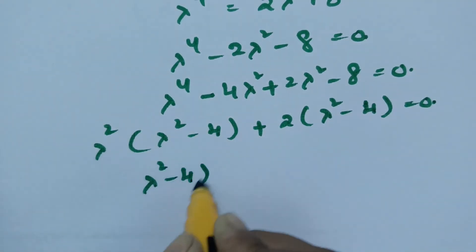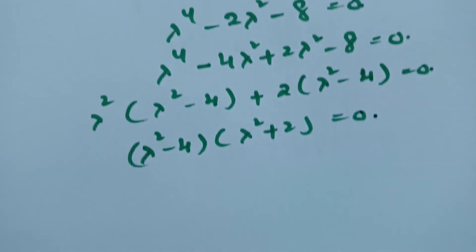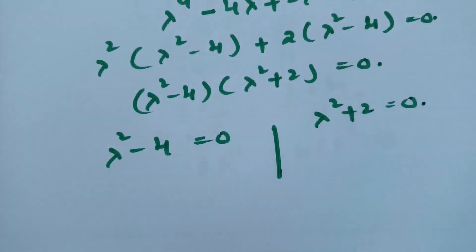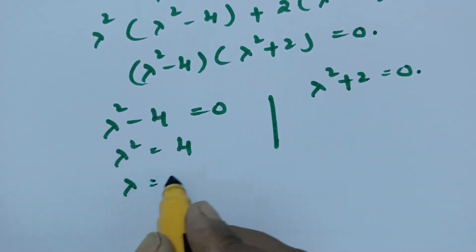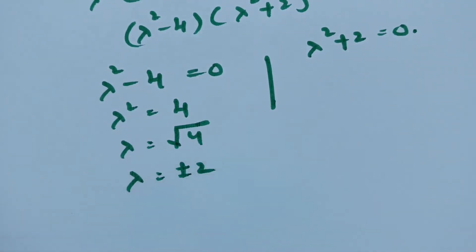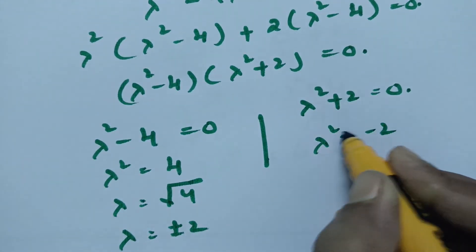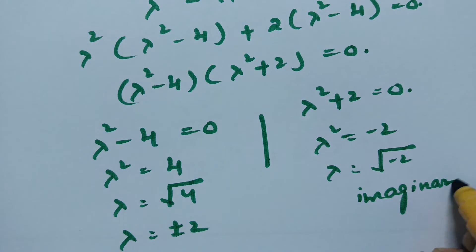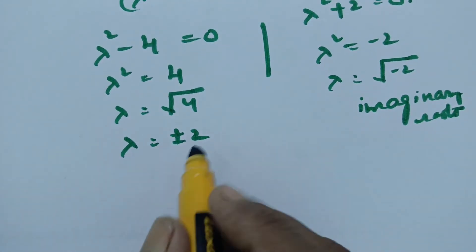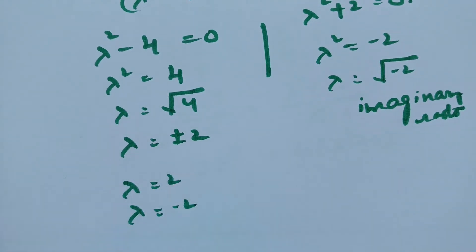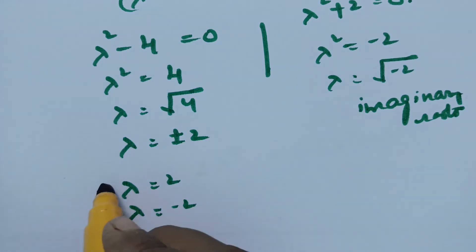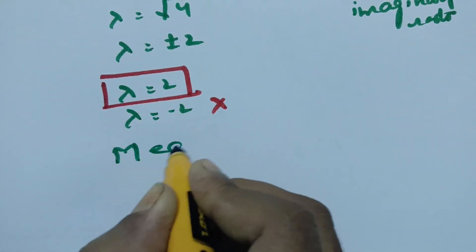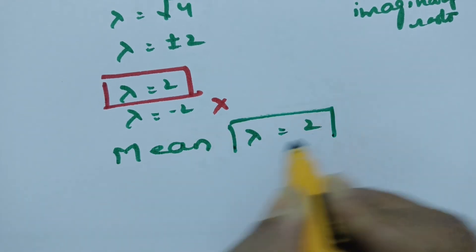Equating the factors: lambda squared minus 4 equals 0, giving lambda squared equals 4, so lambda equals plus or minus 2. The other factor lambda squared plus 2 equals 0 gives lambda equals root of minus 2, which are imaginary roots and are not needed. Since we need a positive mean, we select lambda equals 2. So the mean lambda equals 2.